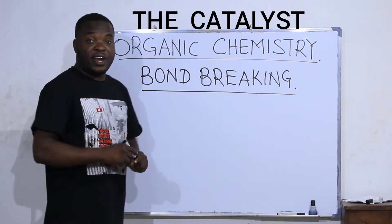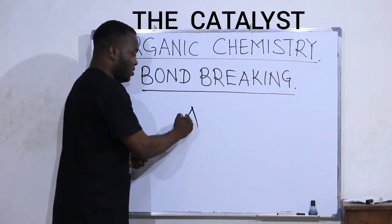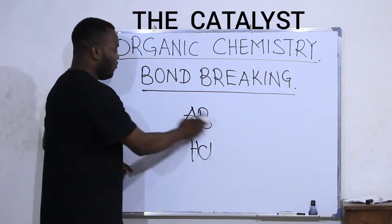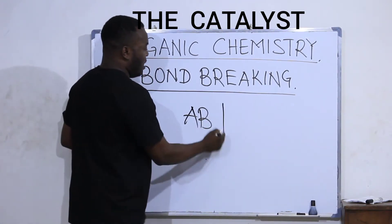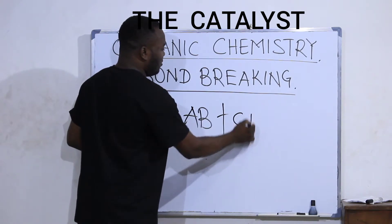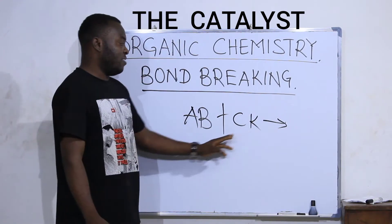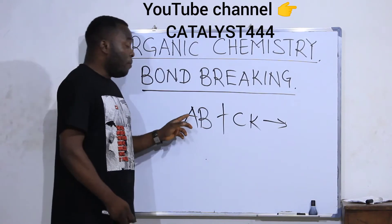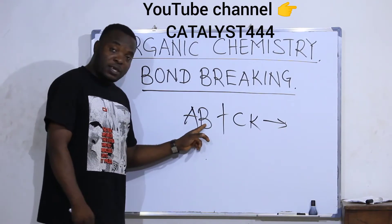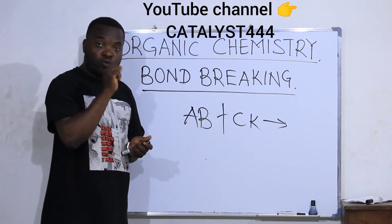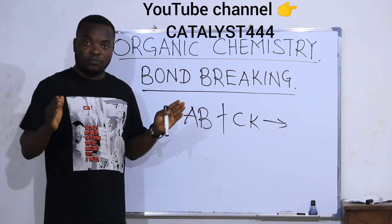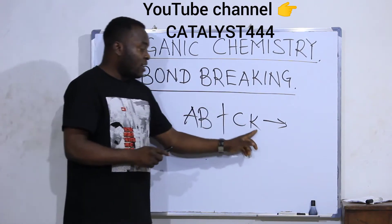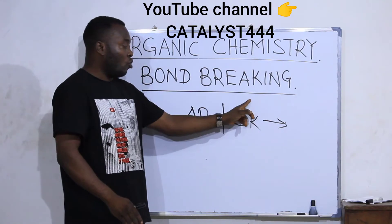For instance, if I have a reactant such as AB — assuming this is a compound just like HCl — and AB is combined with CK, then AB and CK are my reactants. Before AB can react with CK, the bond between A and B in AB must be broken, and A and B must be set free on their own. C and K must also be set free; the bond between C and K should also be broken.